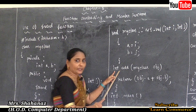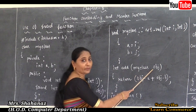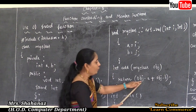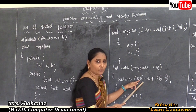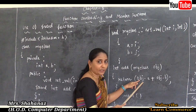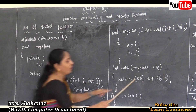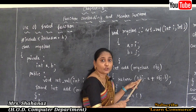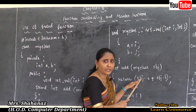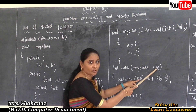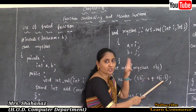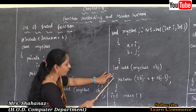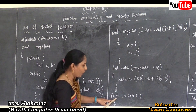Then defining the friend function: int add(myclass obj) — without the prefix 'friend' and without the scope resolution operator. The member variables are accessed using the object name: obj.a + obj.b, since direct access is not allowed. This is the most important note about the friend function.